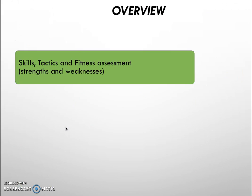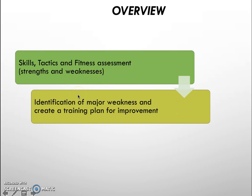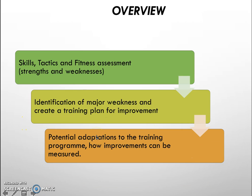Here's an overview of what you'll have to do in your interview after observing. You'll look at skills, tactics, and the fitness assessment — identifying strengths and weaknesses for each component. You must identify a major weakness, then create a training plan. Lastly, there are potential adaptations to your training programme and how improvement can be measured. Today we're focusing on skills, tactics, and fitness assessment — strengths and weaknesses.